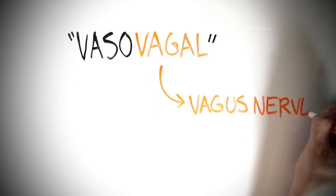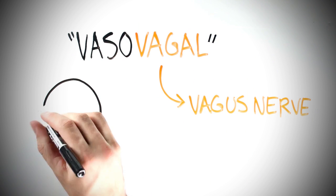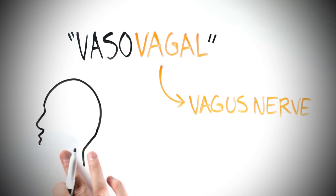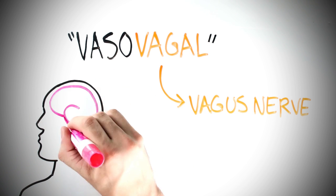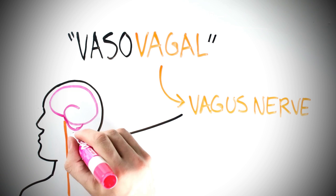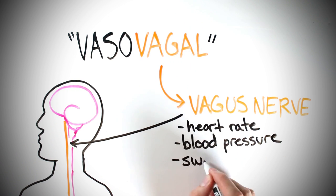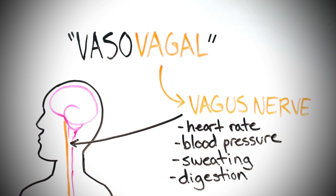Vagal refers to your vagal nerve, which is a very important nerve in your body. It sends information from your brain to the rest of your body about autonomic processes, which means that you have absolutely no control over them, like your heart rate, blood pressure, sweating, digestion, and you can also probably partially blame it if you're having trouble getting it up.